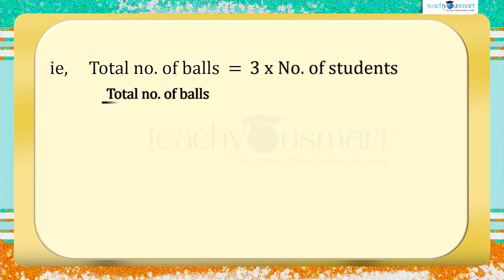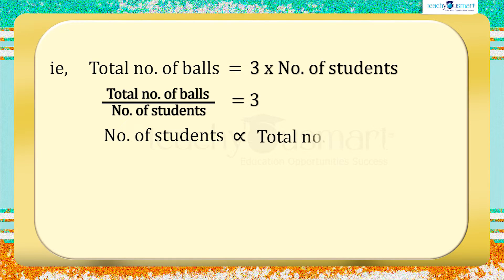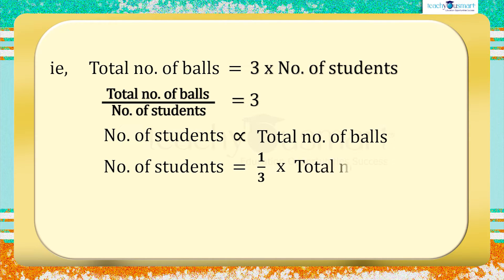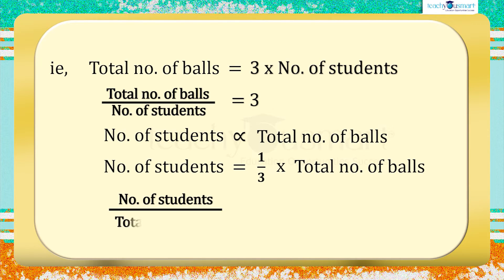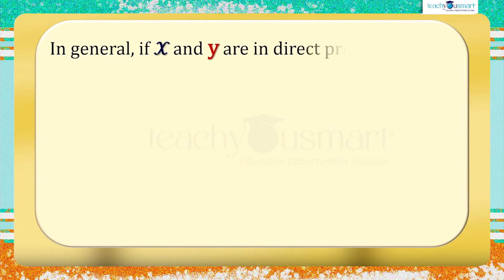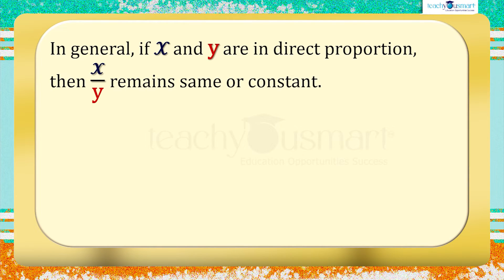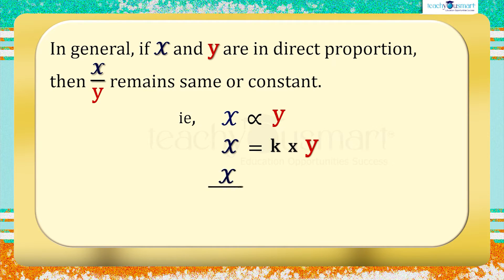Total number of balls ÷ number of students = 3. In the case of number of students ∝ total number of balls, we can write: number of students = (1/3) × total number of balls, where the constant is 1/3. Or, number of students ÷ total number of balls = 1/3. So in general, if x and y are in direct proportion, then x/y remains the same or constant — that is, x ∝ y, or x = k × y (where k is a non-zero constant), and x/y = k.